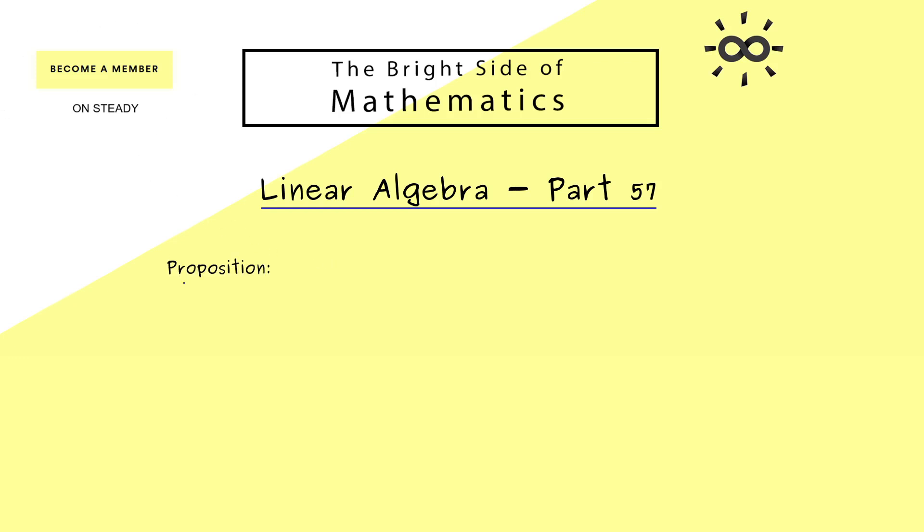OK then I would say without further ado let's immediately start with the proposition of today. And there we will have 3 parts and they are all about the spectrum of a matrix. And you already know the spectrum only makes sense for square matrices.